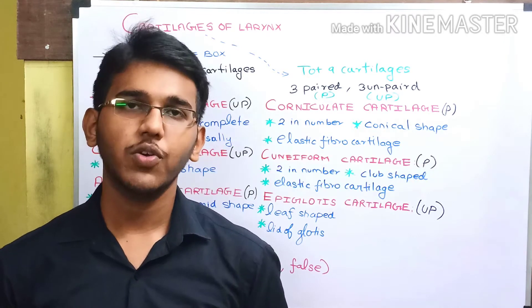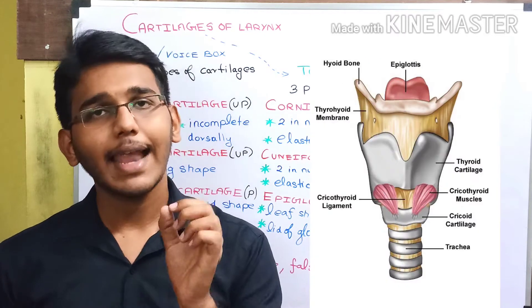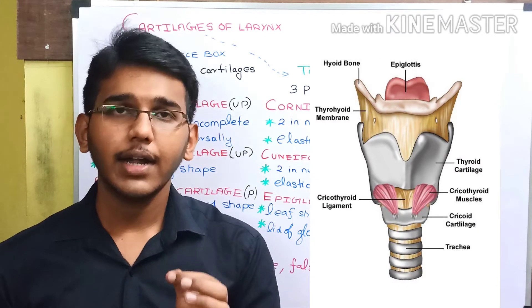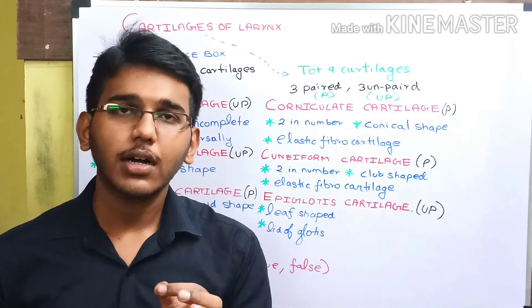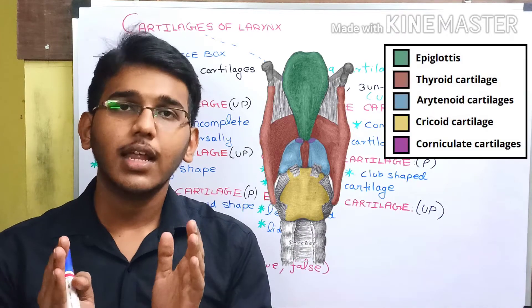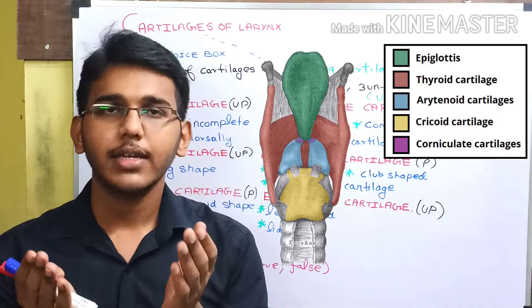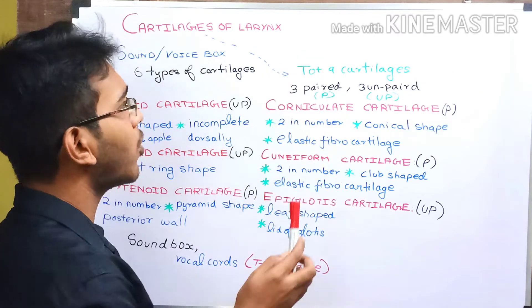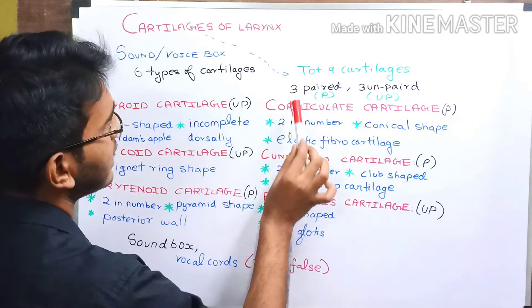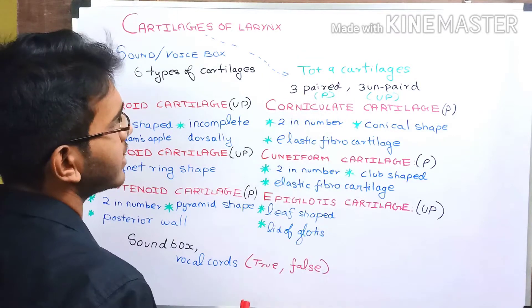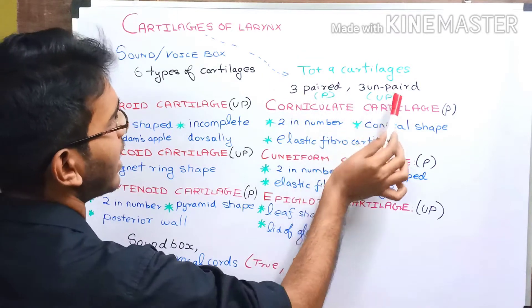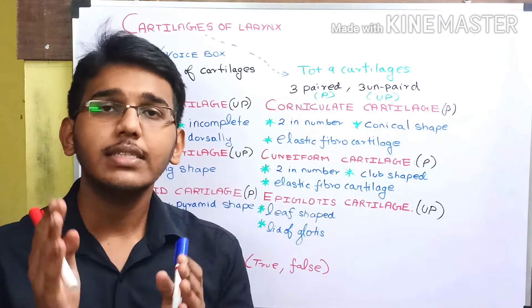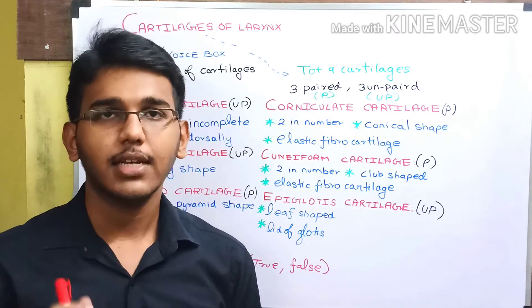Today in this video we are going to discuss about the larynx, part of our breathing system, and about the cartilages by which the larynx is made up of. The larynx consists of totally 9 cartilages — 3 paired cartilages and 3 unpaired cartilages — making up 6 types of cartilages in total.